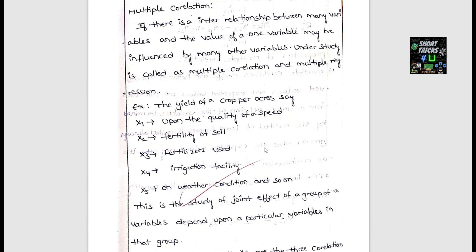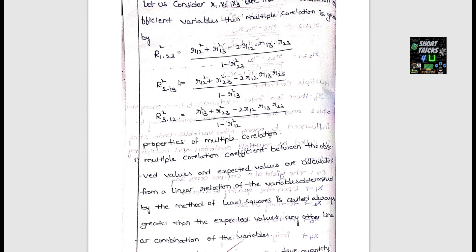Multiple correlation measures the dependence of one variable on several others. For example, crop yield depends on fertilizer, number of irrigation facilities, and quality of seeds — this is multiple correlation. The formula R₁.₂₃ uses r₁₂, r₁₃, and r₂₃ in a specific cyclic arrangement.